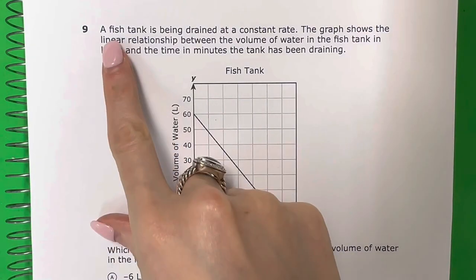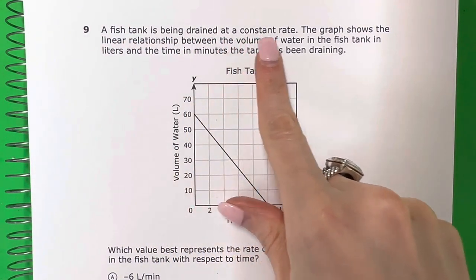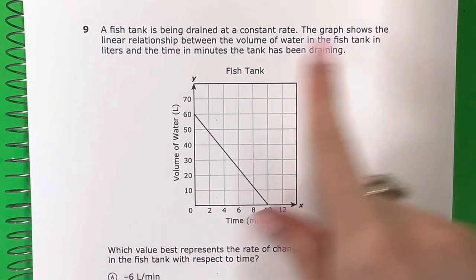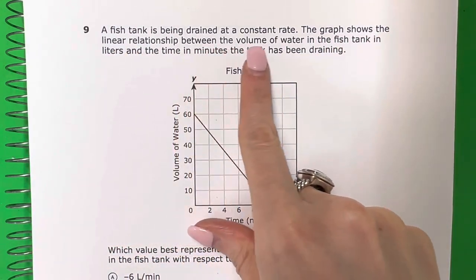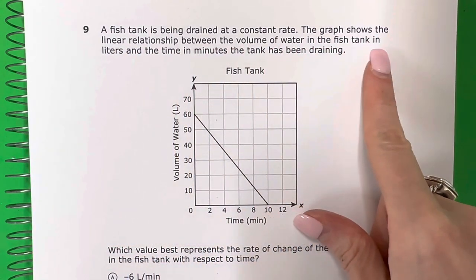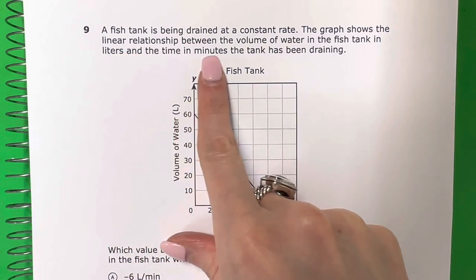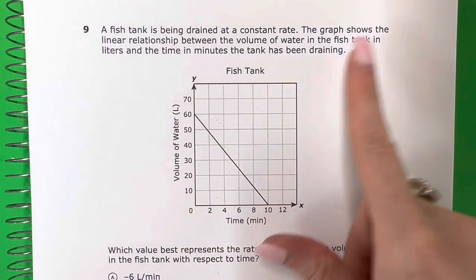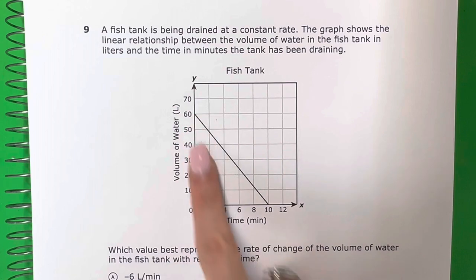Question 9. A fish tank is being drained at a constant rate. The graph shows the linear relationship between the volume of water in the fish tank in liters and the time in minutes the tank has been draining. So nothing really important here. They're just describing this graph.